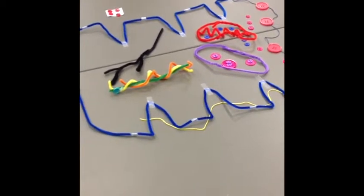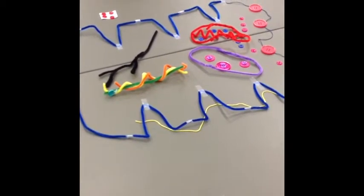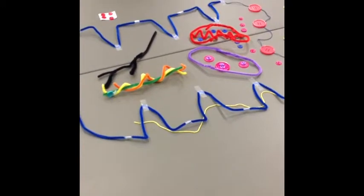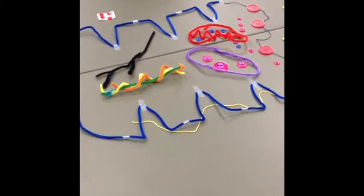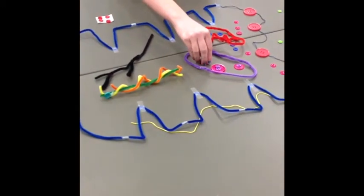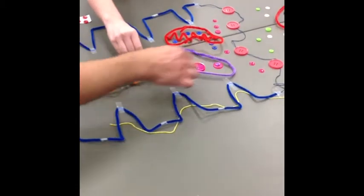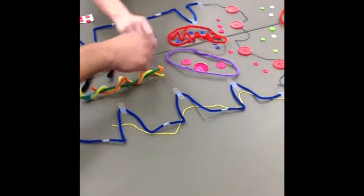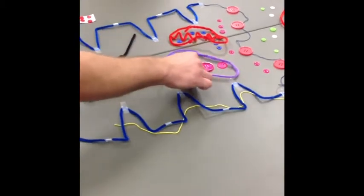When the action potential travels down these T-tubules, calcium is released from the terminal cisternae, which is where calcium has been sequestered. Calsequestrin, represented by the big pink button, of the sarcoplasmic reticulum, represented by the purple pipe cleaner.